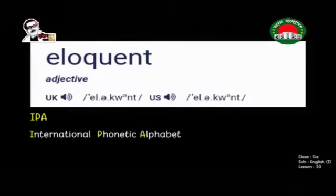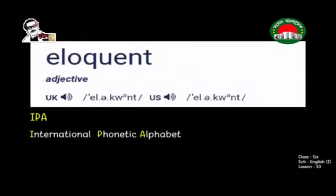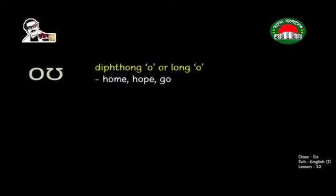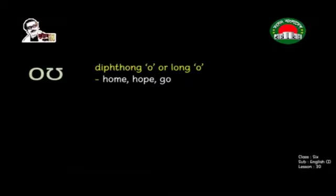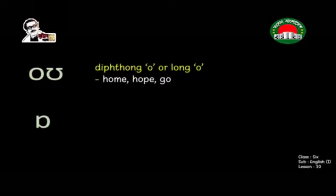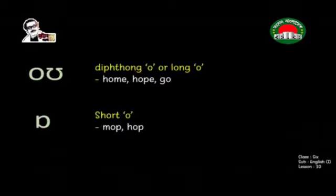You already know it. If you ever see this sign — 'O' with a long mark — that means you need to pronounce O like a long 'O', just like in the words home, hope, go. If you see this sign — 'O' with a short mark — that means it's a short O sound, just like in the words mop, hop.